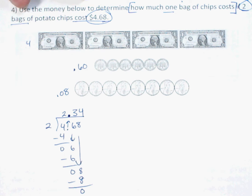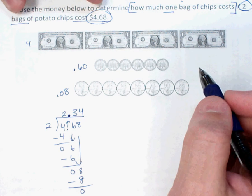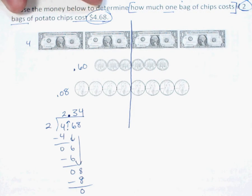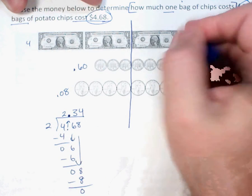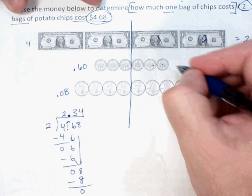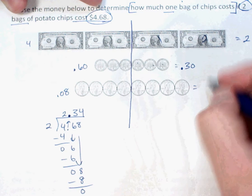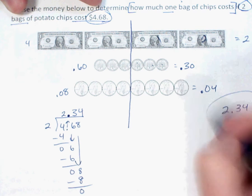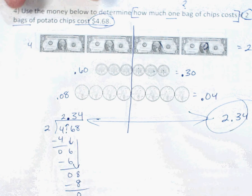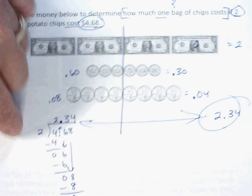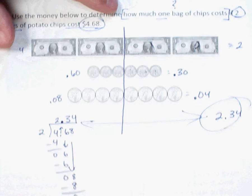The other thing I can do — since it's given me this model and I'm dividing by two — is draw a line right through the middle, separating it into two equal halves. I've got two dollars here, thirty cents here, and four cents here — giving me $2.34. That matches my computation answer of $2.34. Use those models when they give them to you, but also do the computation as a check. If you get the same answer on both, you probably did it correctly.